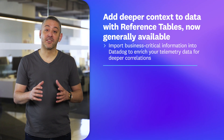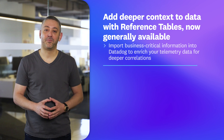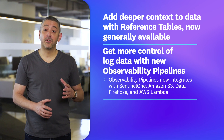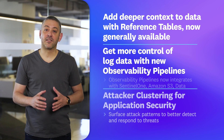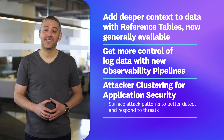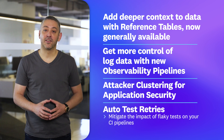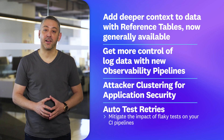Hello and welcome to This Month in Datadog, where we'll update you on our latest features, product announcements, events and more. This month we're spotlighting the ability to enrich your existing Datadog telemetry with custom metadata using reference tables. We're also covering several new features of Datadog observability pipelines, a new security feature designed to identify and group together attacker behavior during distributed attacks, and auto test retries, which helps to mitigate the impact of flaky tests on your CI pipelines.